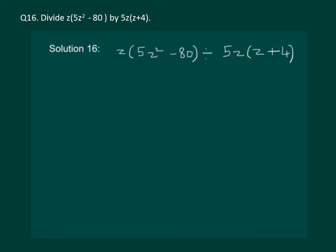Let us read the question. Divide z into 5z square minus 80 by 5z into z plus 4.